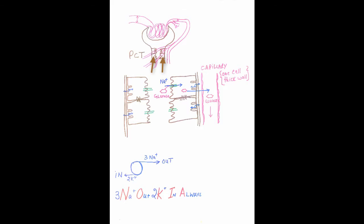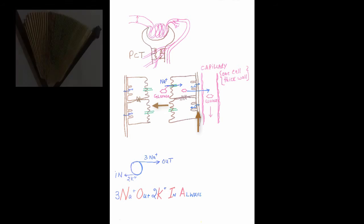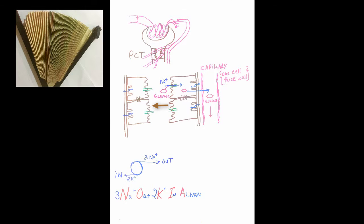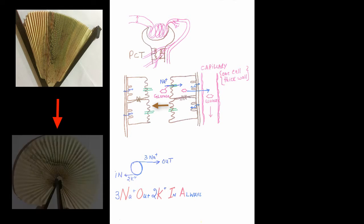There is the lumen side of these cells and there is the basal side of these cells. The lumen side is thrown into folds, and this increases the surface area immensely.